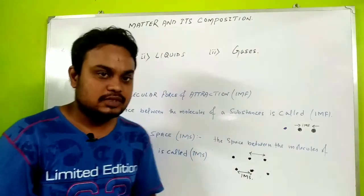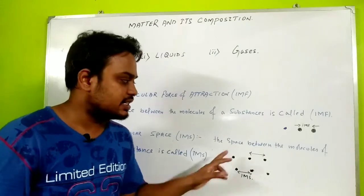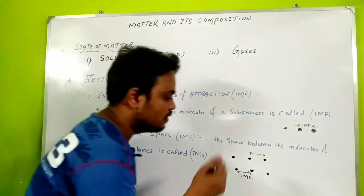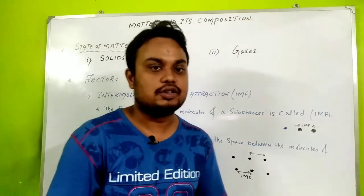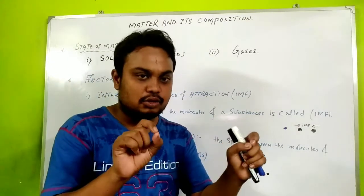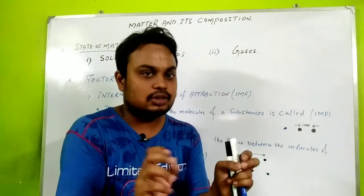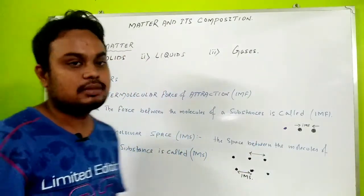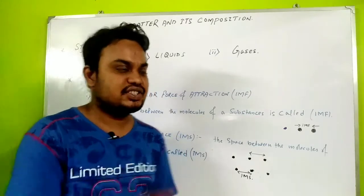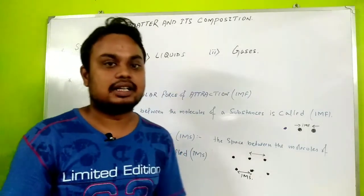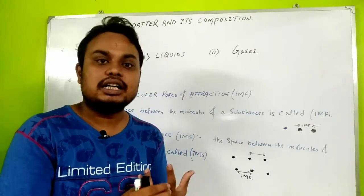The second factor is intermolecular space — the distance between the molecules of a substance is called intermolecular space. These are the two factors on which the state of matter depends — whether a substance is solid, liquid, or gas.